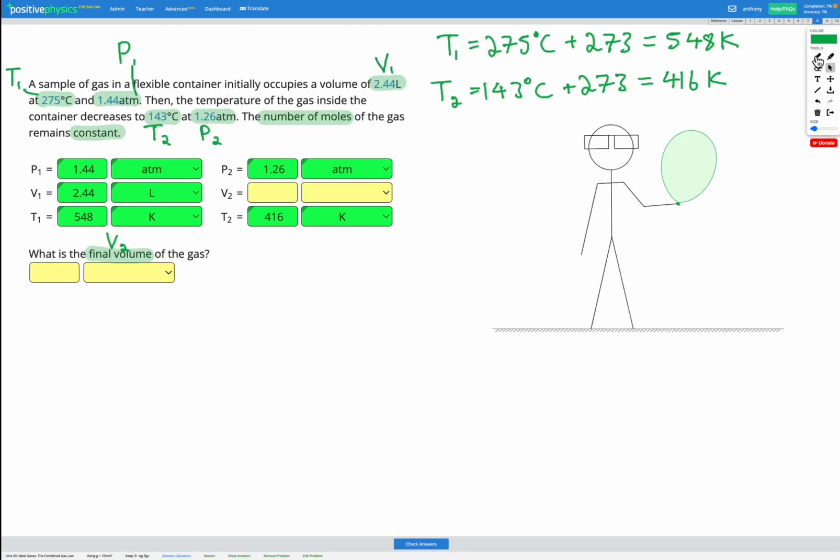So let's write that down. We've got P1 times V1 divided by T1 is equal to P2 times V2 divided by T2. So there's our equation.